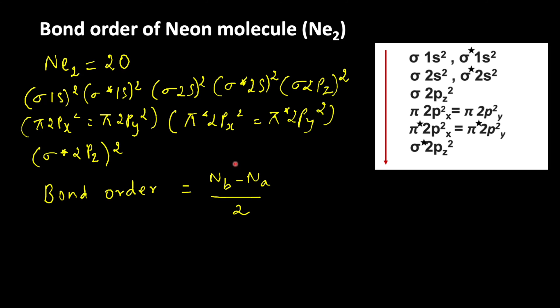For antibonding electrons, sigma star 1s2, so 2. Sigma star 2s2, 2 plus 2 is 4, then here 6, 8, 10. It means the number of bonding and antibonding electrons are equal in neon molecule.